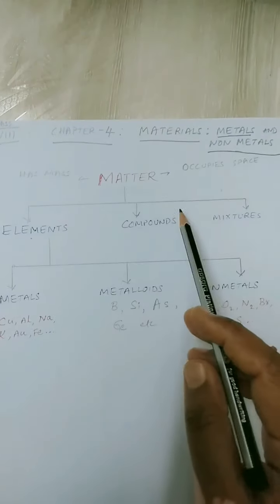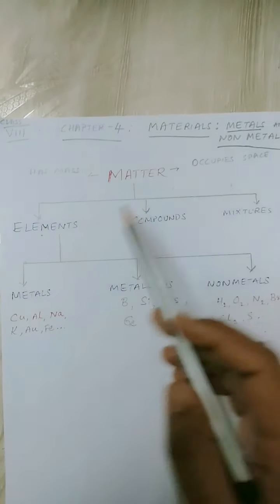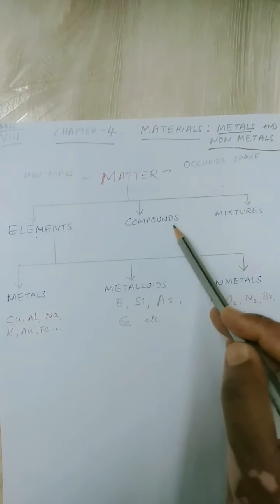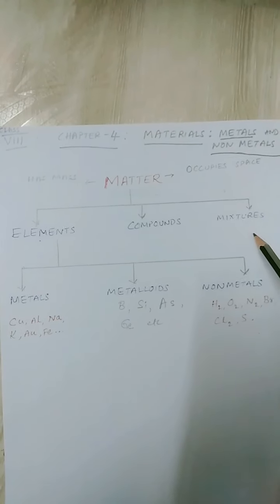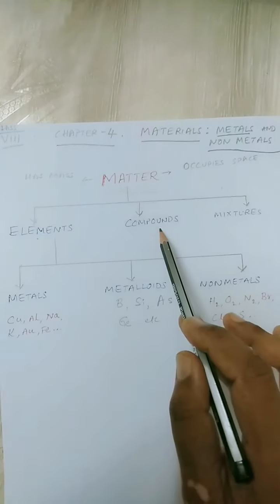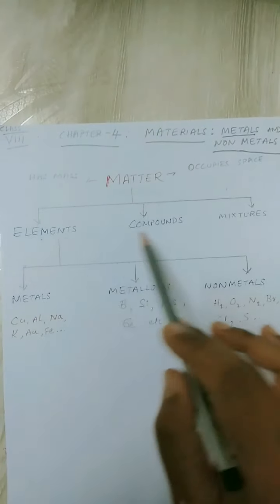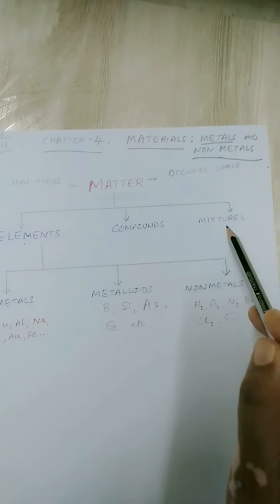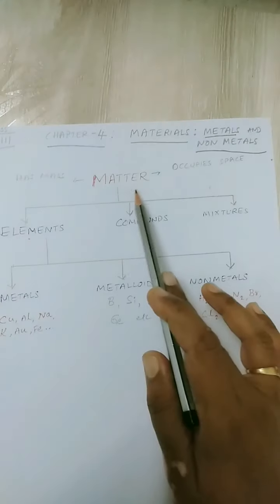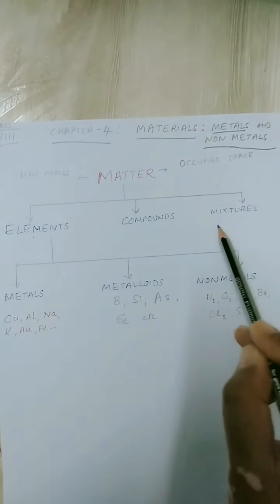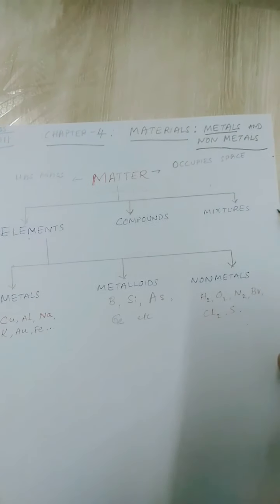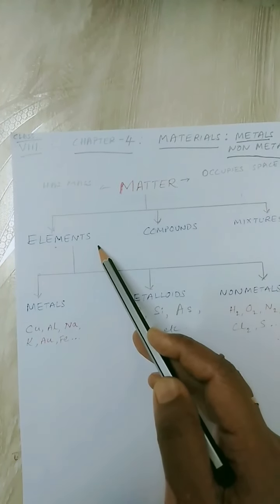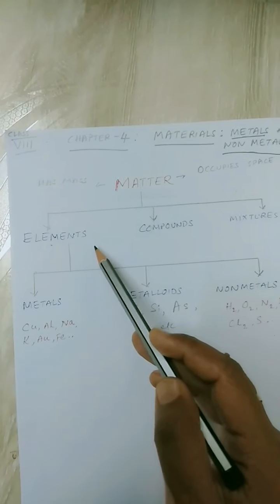Matter can be present in different forms — it can be present as elements, compounds, or mixtures. Elements and compounds are the purest forms of matter, whereas mixtures are not pure but are the impure form of matter. We will learn about compounds and mixtures separately in higher classes. For now, let us concentrate on elements.